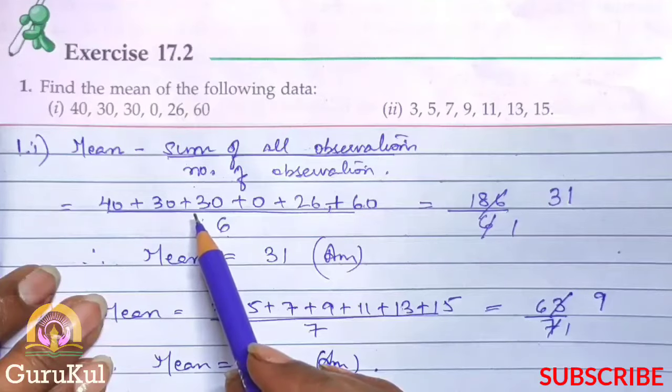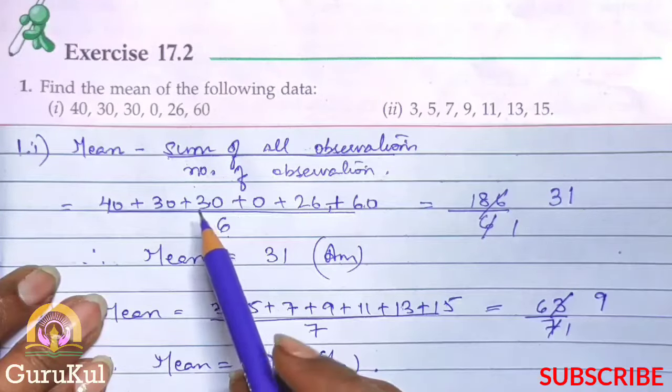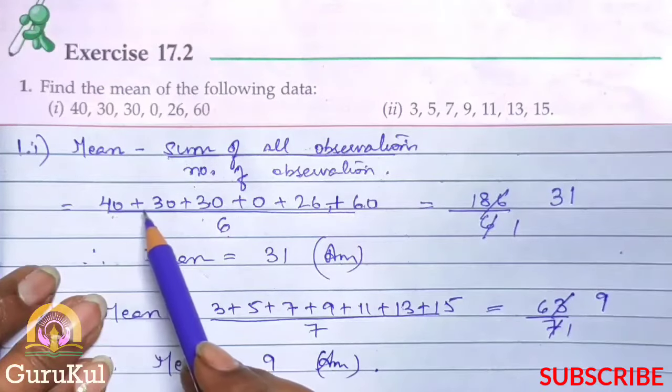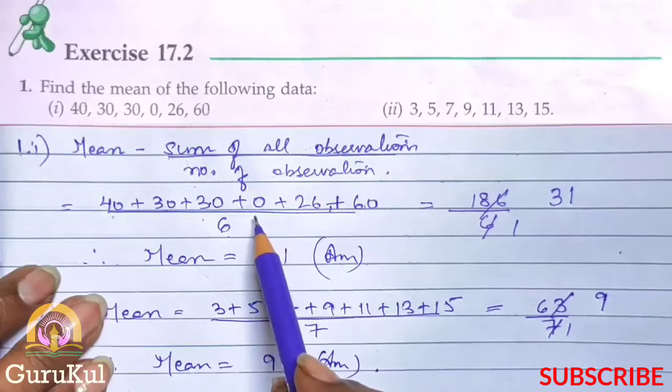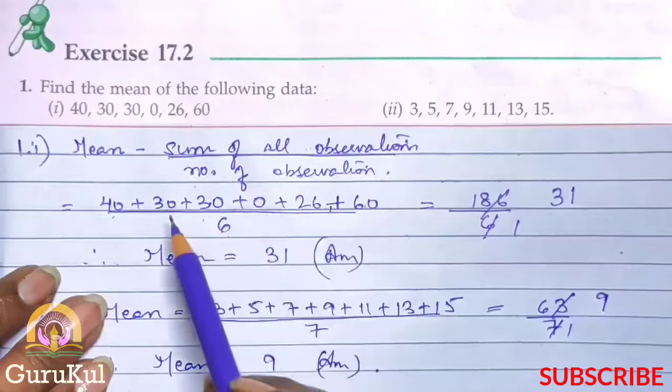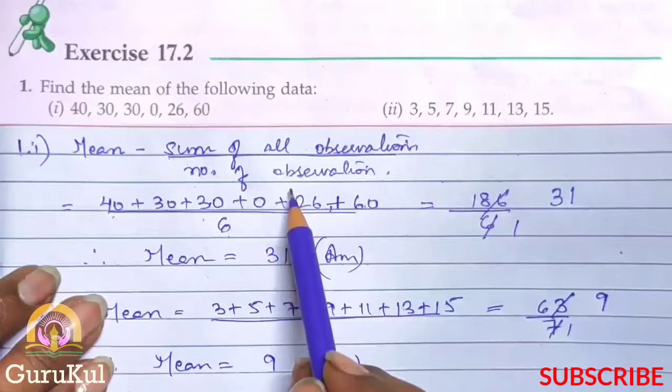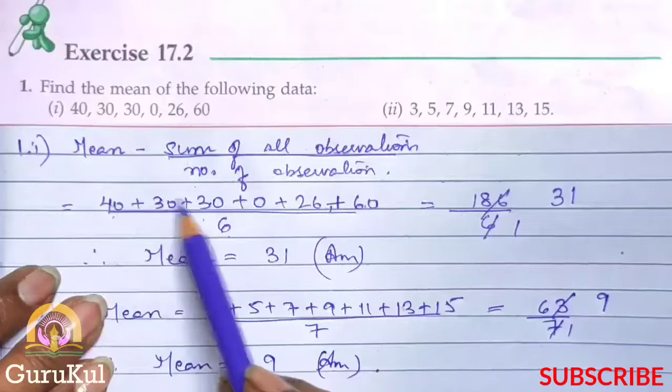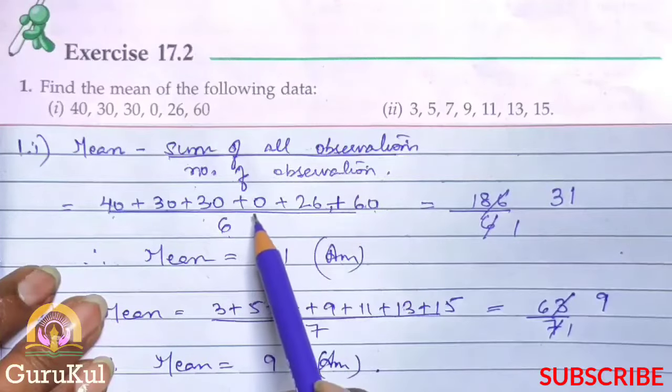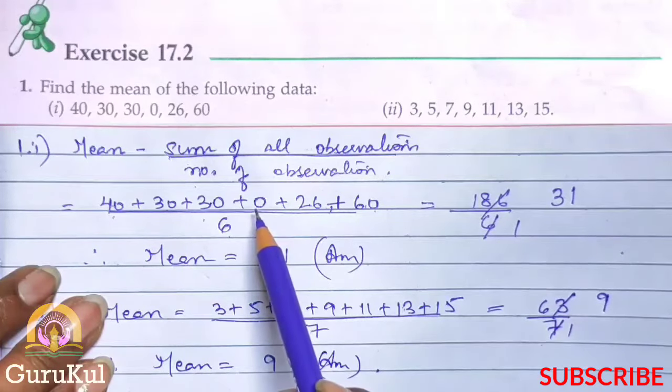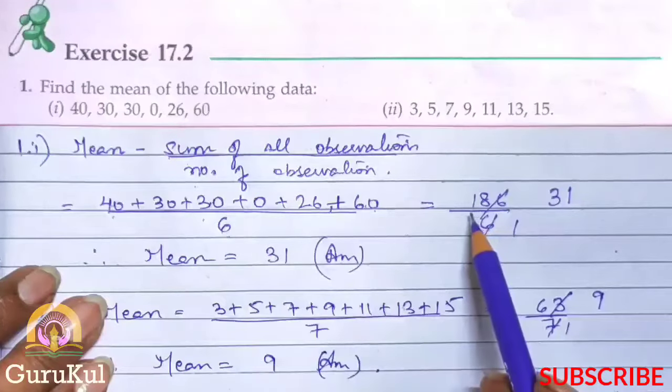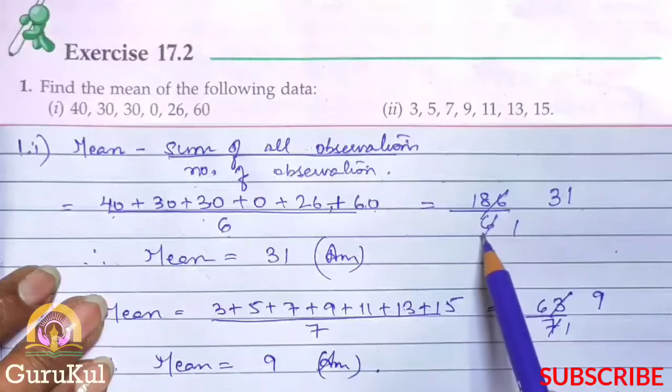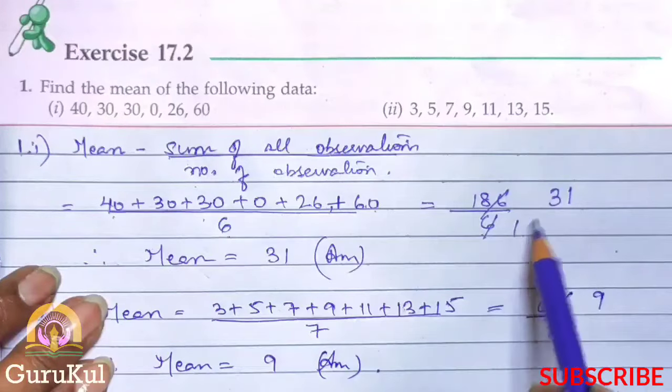What are the observations in question? 40, 30, 30, 0, 26 and 60. So we have to find out how many of these observations are there. 40 plus 30 plus 30 plus 0 plus 26 plus 60 divided by number of observations. That means 1, 2, 3, 4, 5, 6. As you can see I have also counted 0. So please don't forget 0. So this is 6. The answer is 186 by 6, which equals 31.